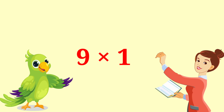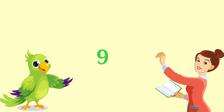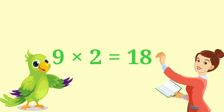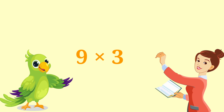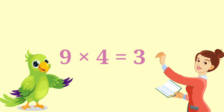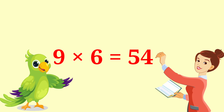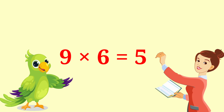9 ones are 9. 9 twos are 18. 9 threes are 27. 9 fours are 36. 9 fives are 45. 9 sixes are 54.